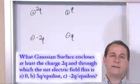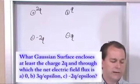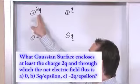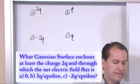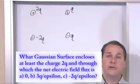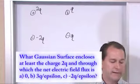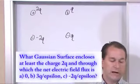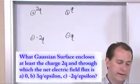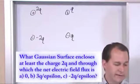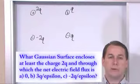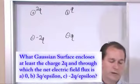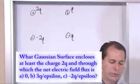So with this diagram in mind with these four charges, by the way these four charges are arranged sort of in a square, the question goes like this: What Gaussian surface encloses at least the charge 2q, at least the charge positive 2q, and through which the net electric field flux is - and then I have three different things here. We're going to calculate when the flux is zero, we're going to calculate when the flux is 3q over the permittivity, and we're going to calculate when the flux is negative 2q over the permittivity.